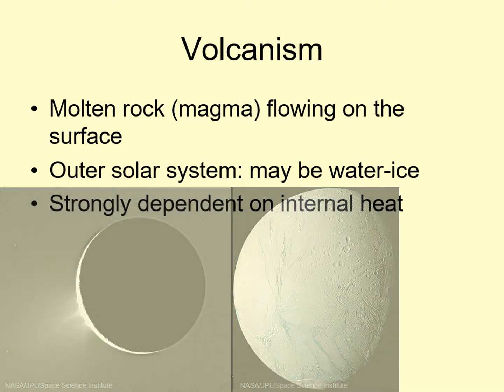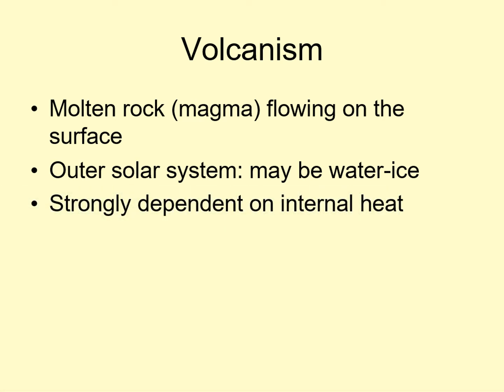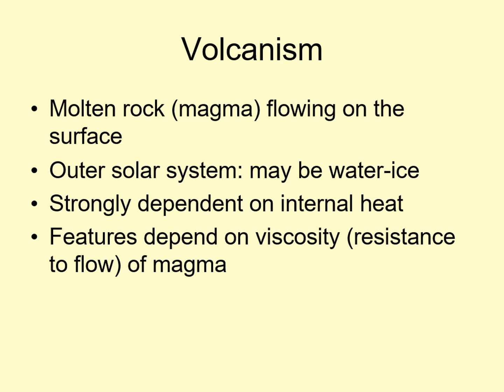Volcanism is powered by the internal heat in the world. The closer the interior is to being molten, the more volcanism there will be. The features that volcanism produces on the surface of a world depend mainly on the viscosity of the magma produced. By viscosity, we mean the magma's resistance to flow — water is very low viscosity, while silly putty has a much higher viscosity. Let's look at the types of volcanic features produced by different degrees of viscosity.